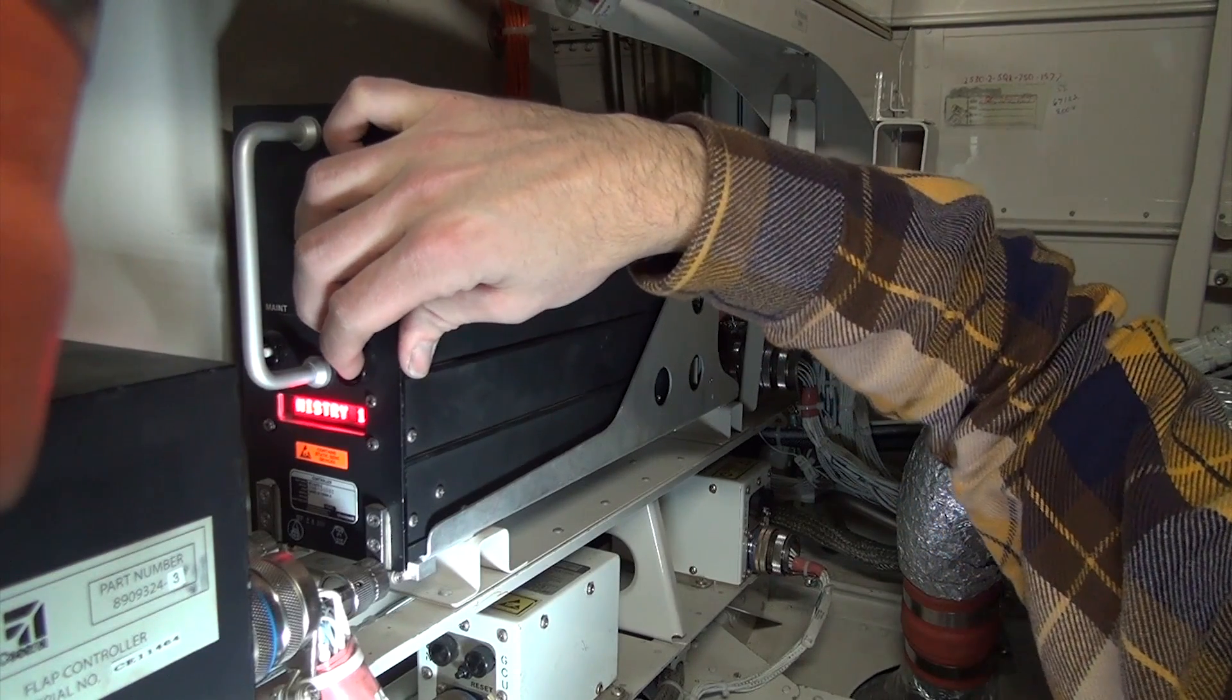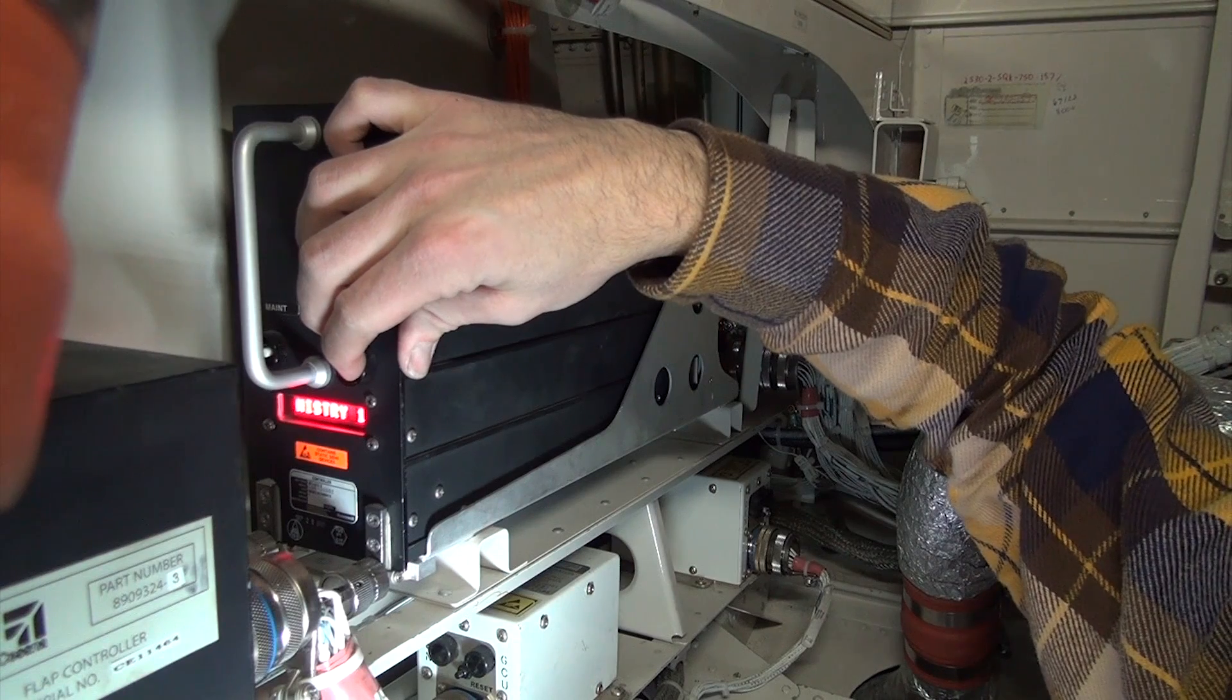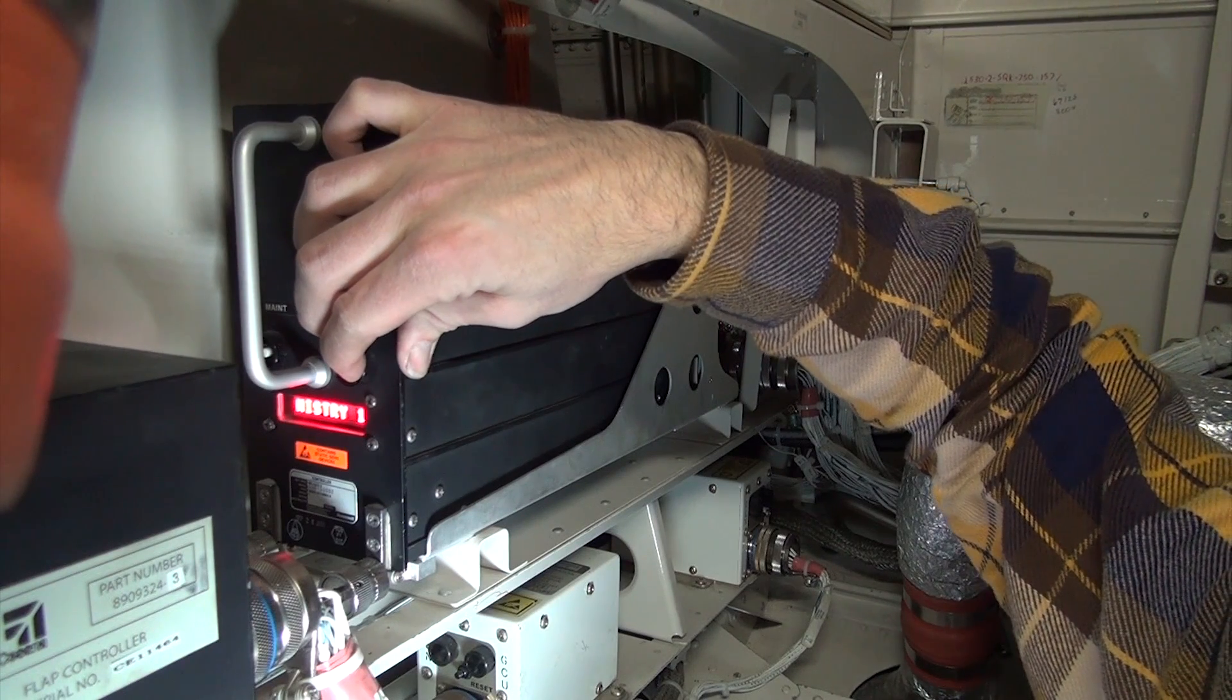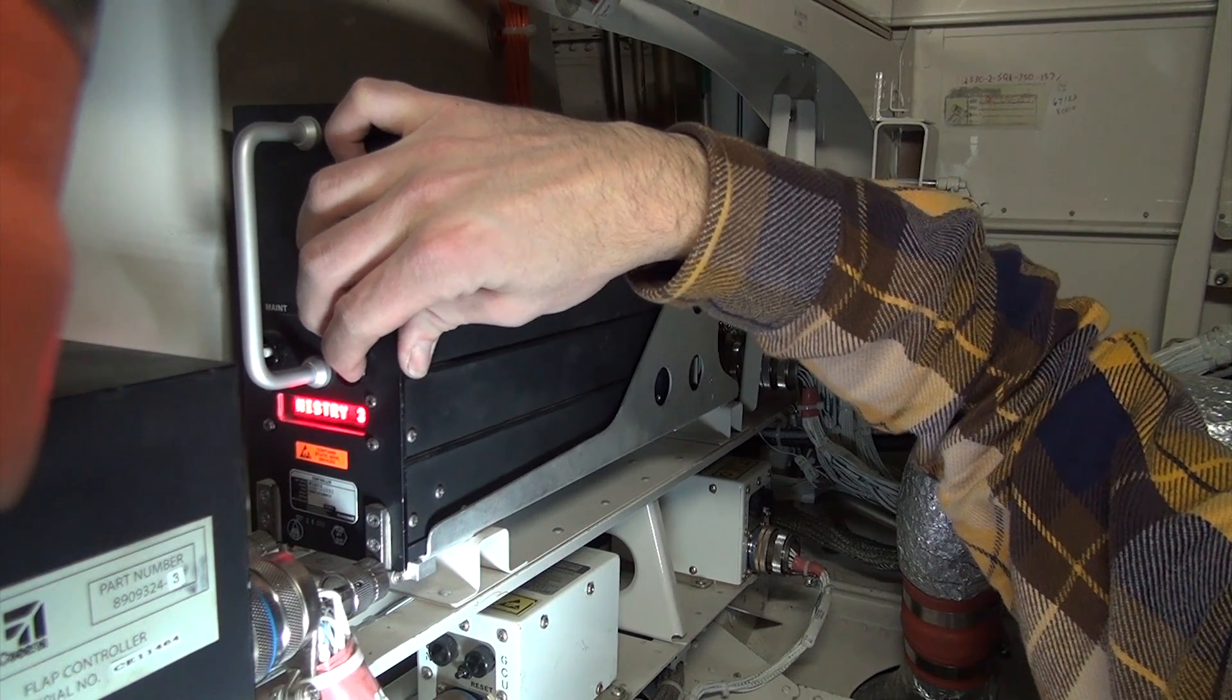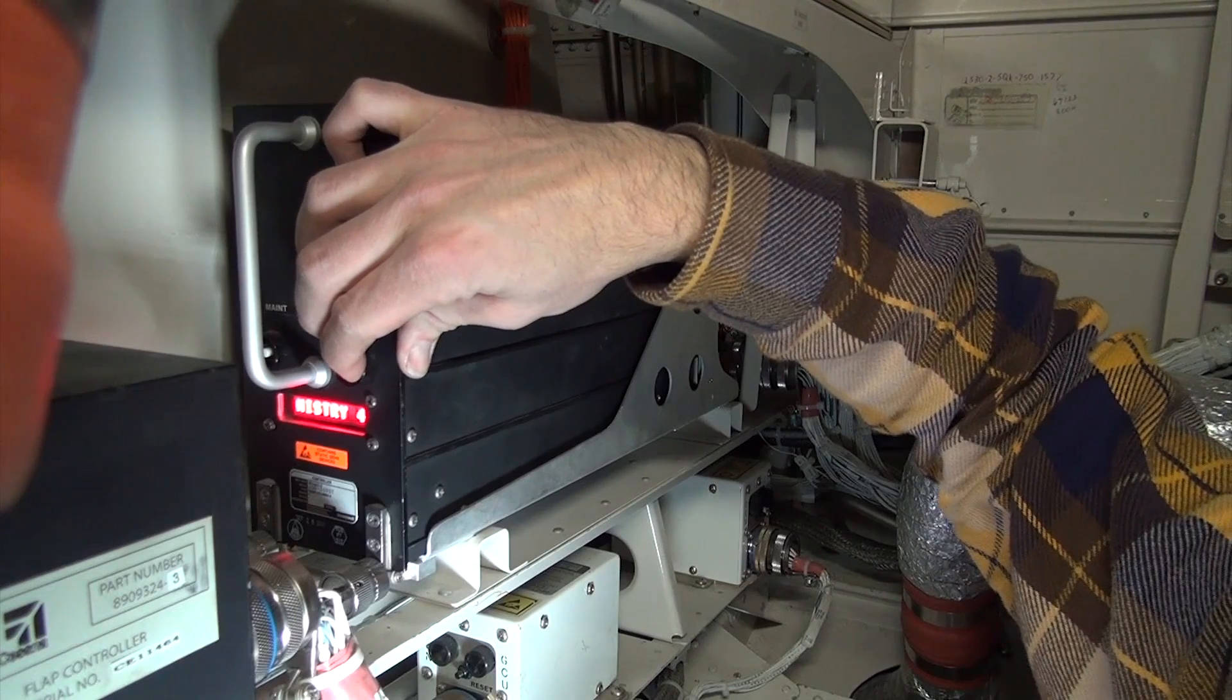Press the Fault button. History 1 will be displayed. You may press the Fault button up to five times to review the last five shutdown histories.